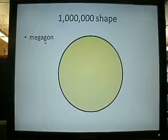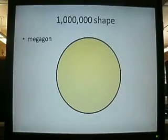Now, here we have a Megagon, a 1-million-sided shape, which is basically a circle.